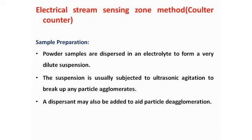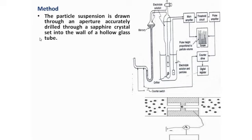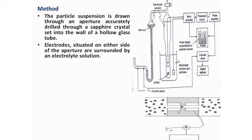This is the diagram of the instrument. The particle suspension is drawn through a small orifice or aperture. The electrodes are situated on either side of the aperture. They are surrounded by the electrolyte solution.